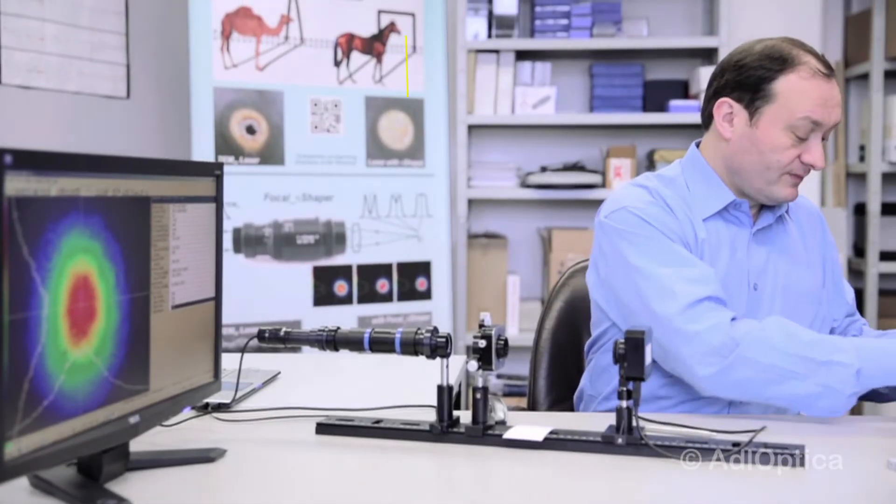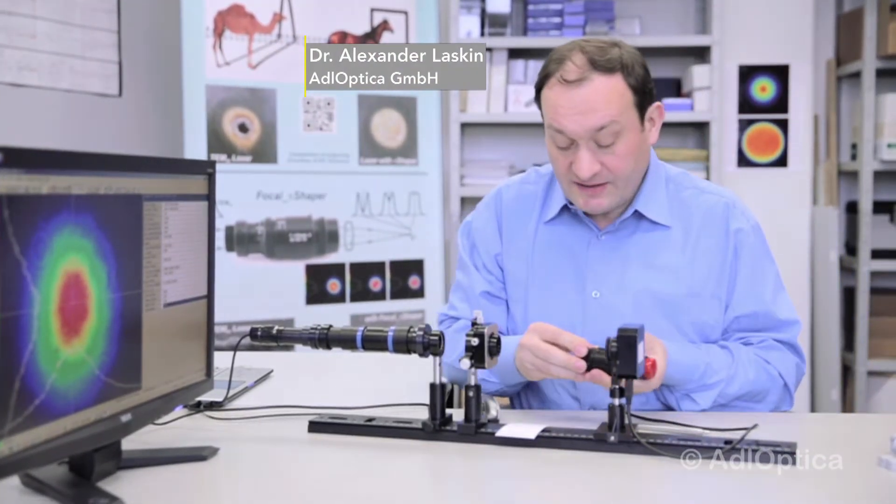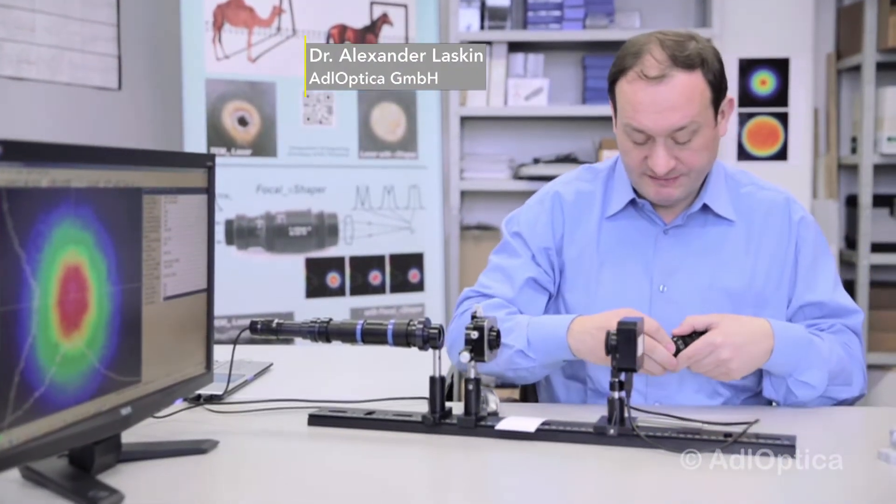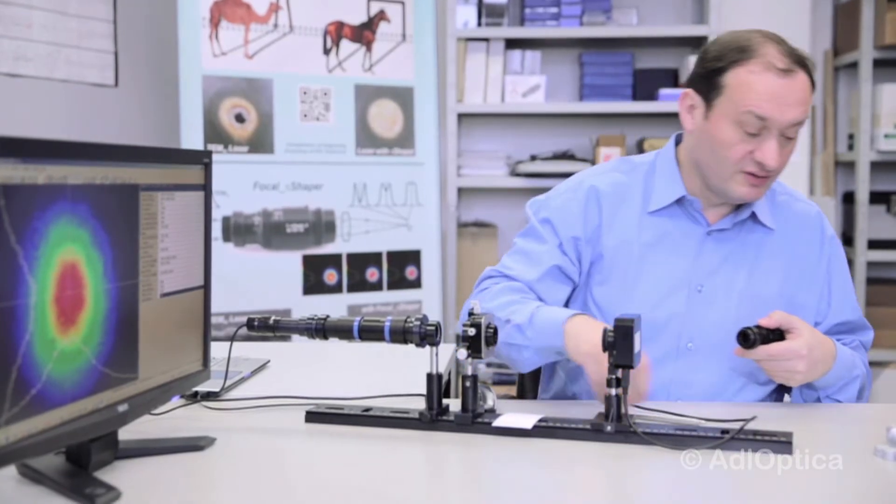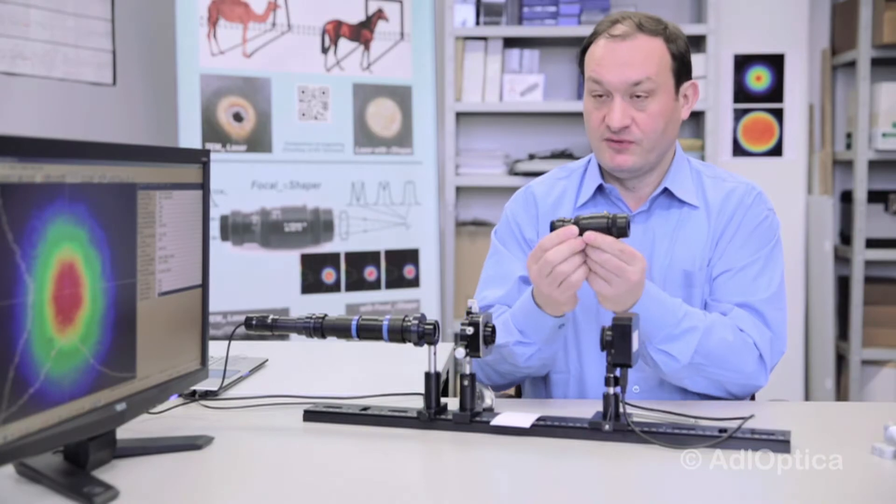This is another device. It's intended to create flat-top spots in the back focal plane of a lens installed after it. So this is a focal pie shaper.